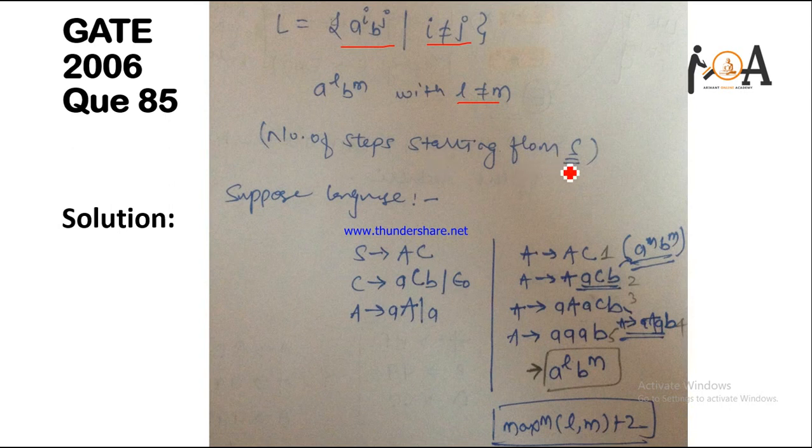Suppose the language S is given as: S derives AC, C tends to ACB and epsilon, and A derives AA and small a. We have to consider this also. So suppose S is given as AC; it is the first step.